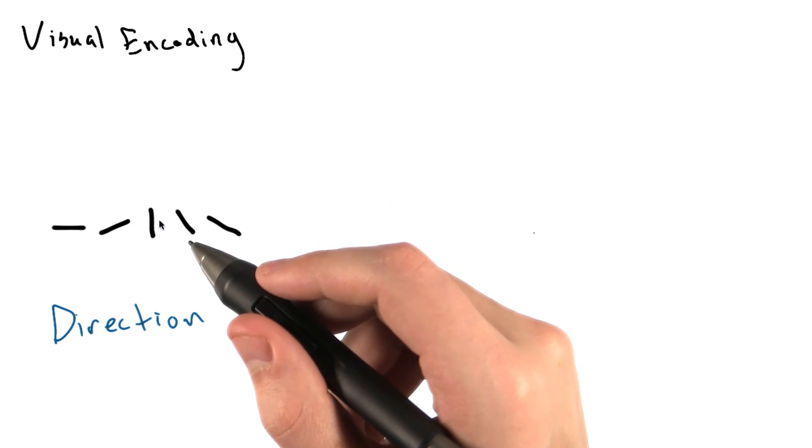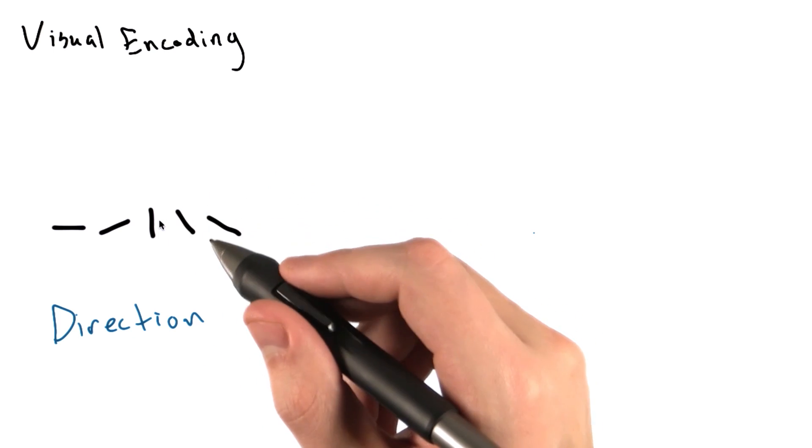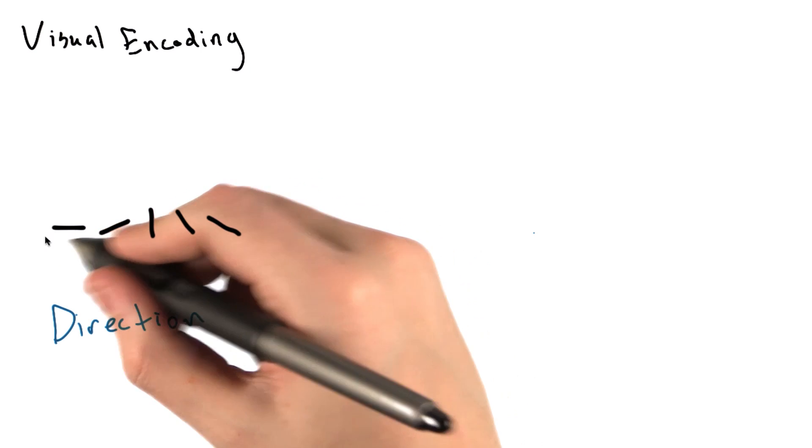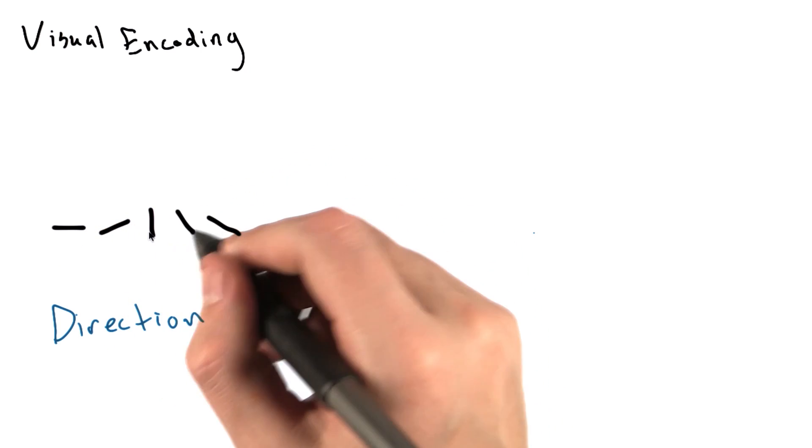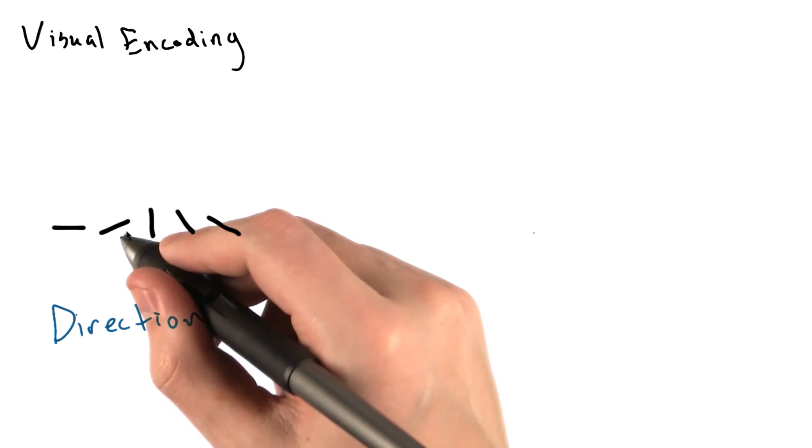However, direction is tricky for many of the same reasons that angle is tricky. We can easily differentiate a horizontal or vertical line, but when we're dealing with lines with angles, it's harder to see the difference between two that are both negative or positive.